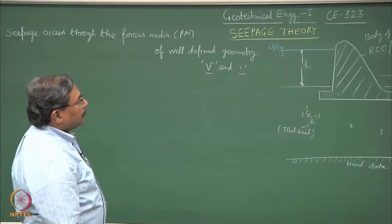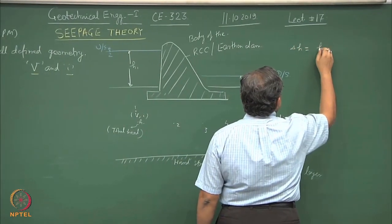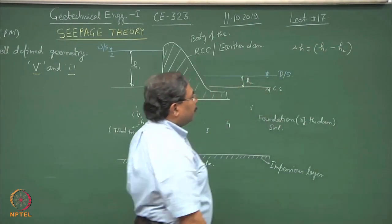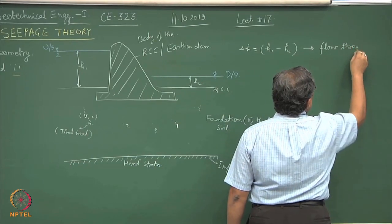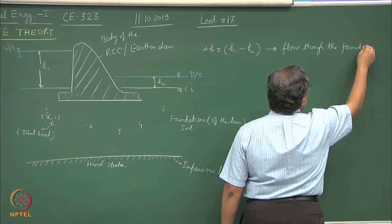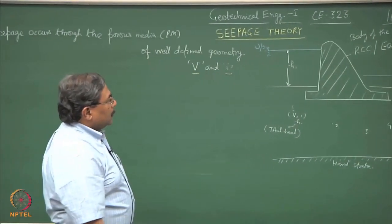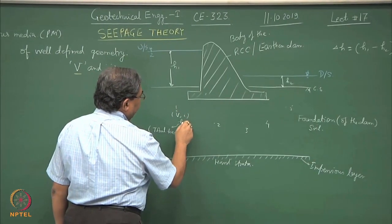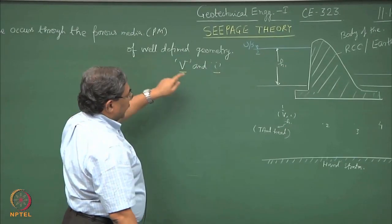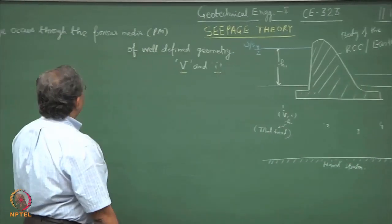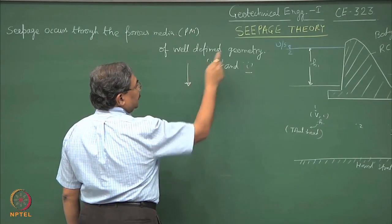If I define the upstream head as h1 and the height of the downstream water column as h2, it would be very difficult to find out the values of v, i, and the head h at different points such as point 1, 2, 3, 4, 5 and so on. My interest is to find out how much seepage is taking place through the foundations of this system — the foundation soil of the earthen dam. The difference of head between h1 and h2 is responsible for causing the flow through the foundations. We take help of seepage theory or the flow net.